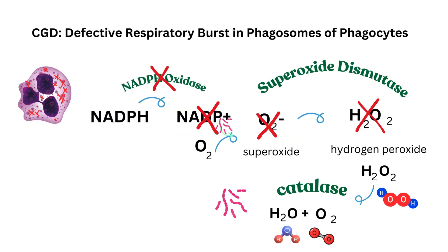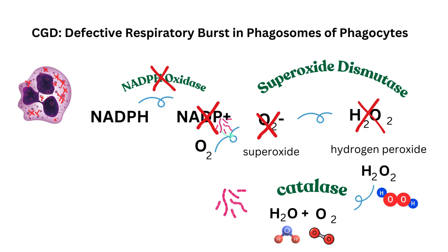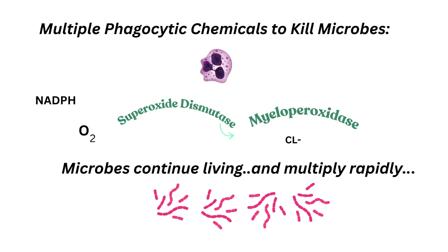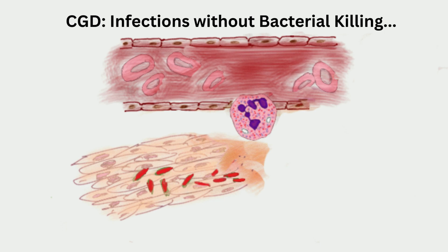Even if there were partial production of hydrogen peroxide by superoxide dismutase, catalase-positive bacteria evolved a defense to produce catalase enzymes to neutralize hydrogen peroxide from phagocytes into harmless water and oxygen. In CGD, we have an infection without bacterial killing.